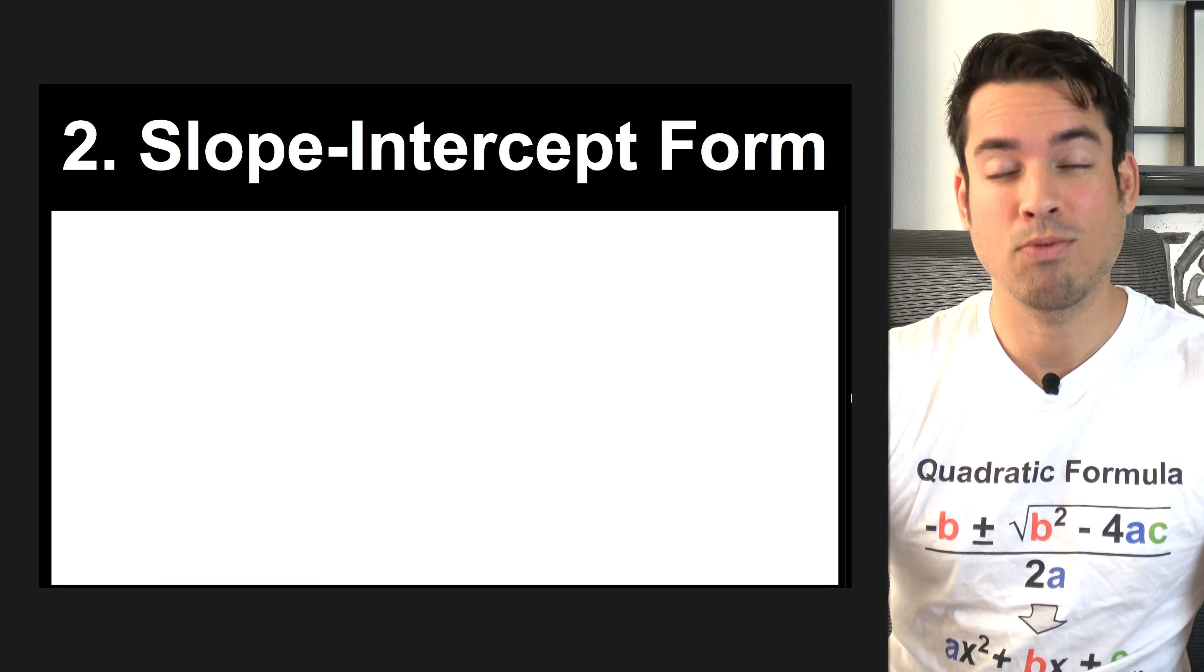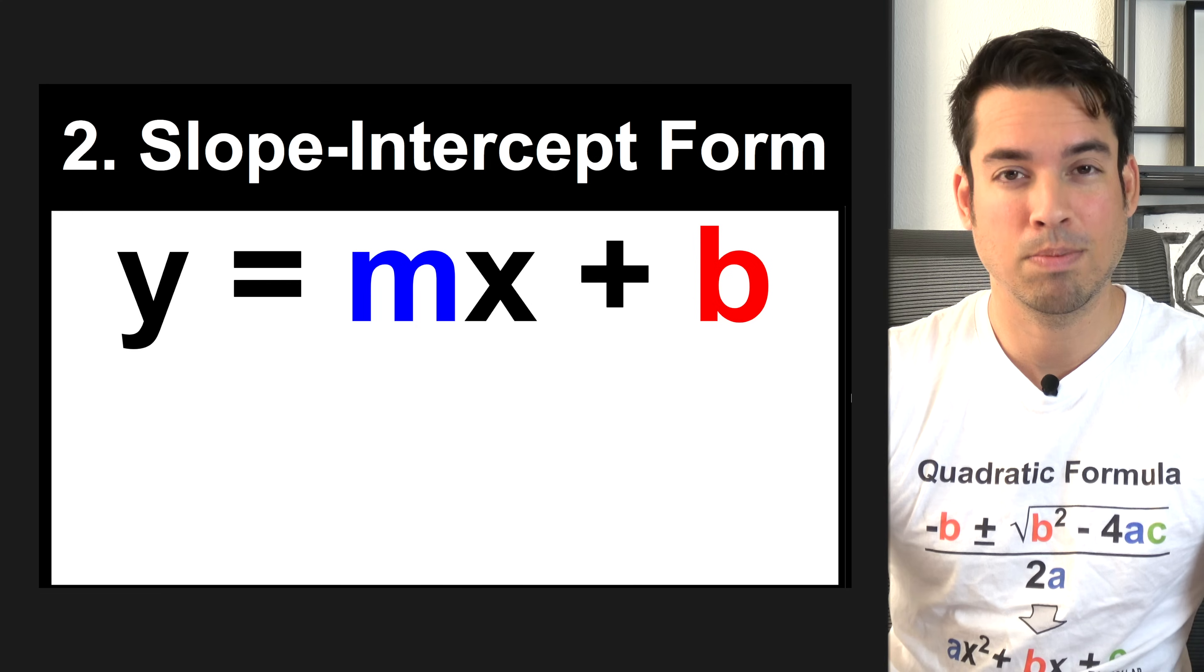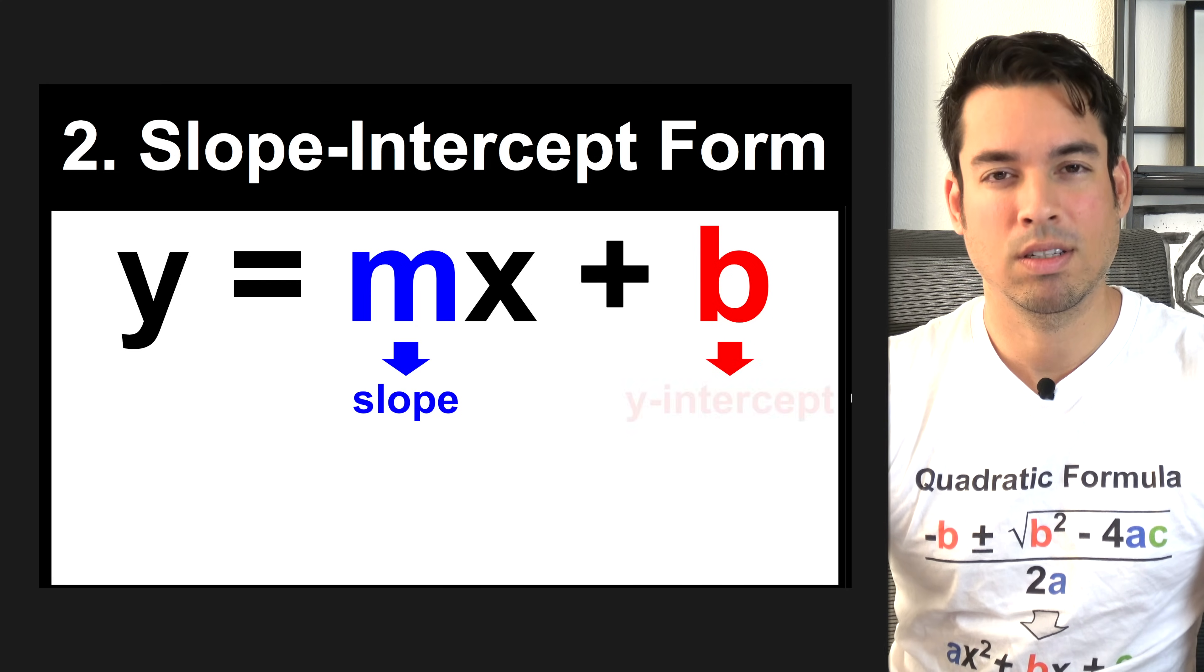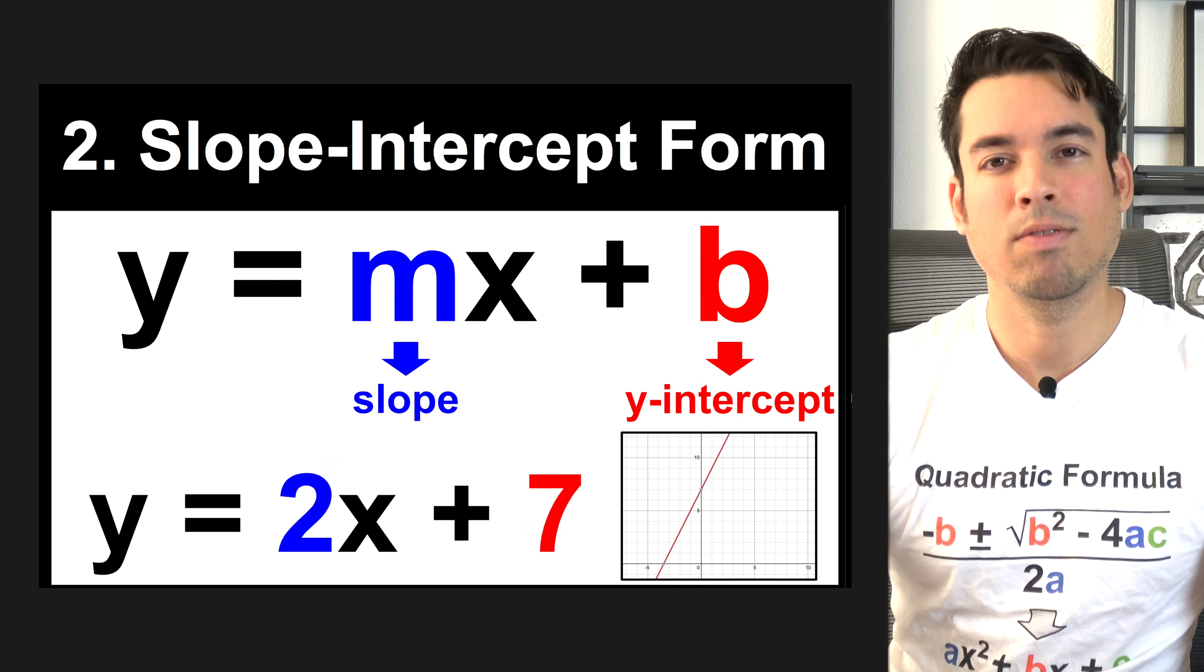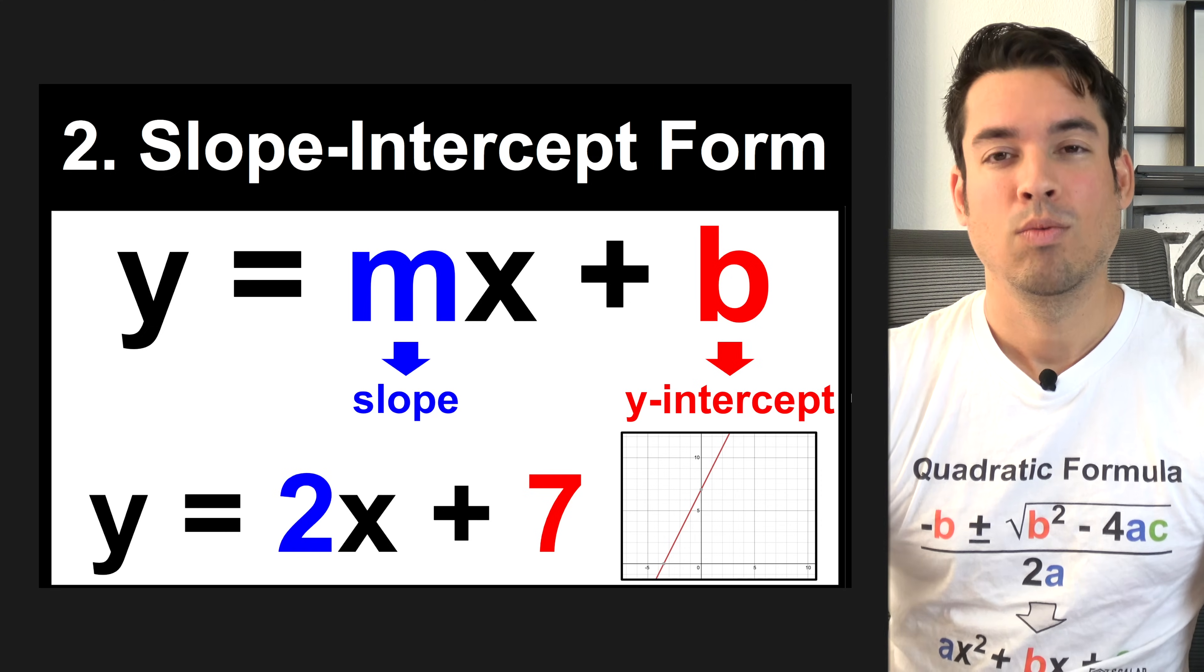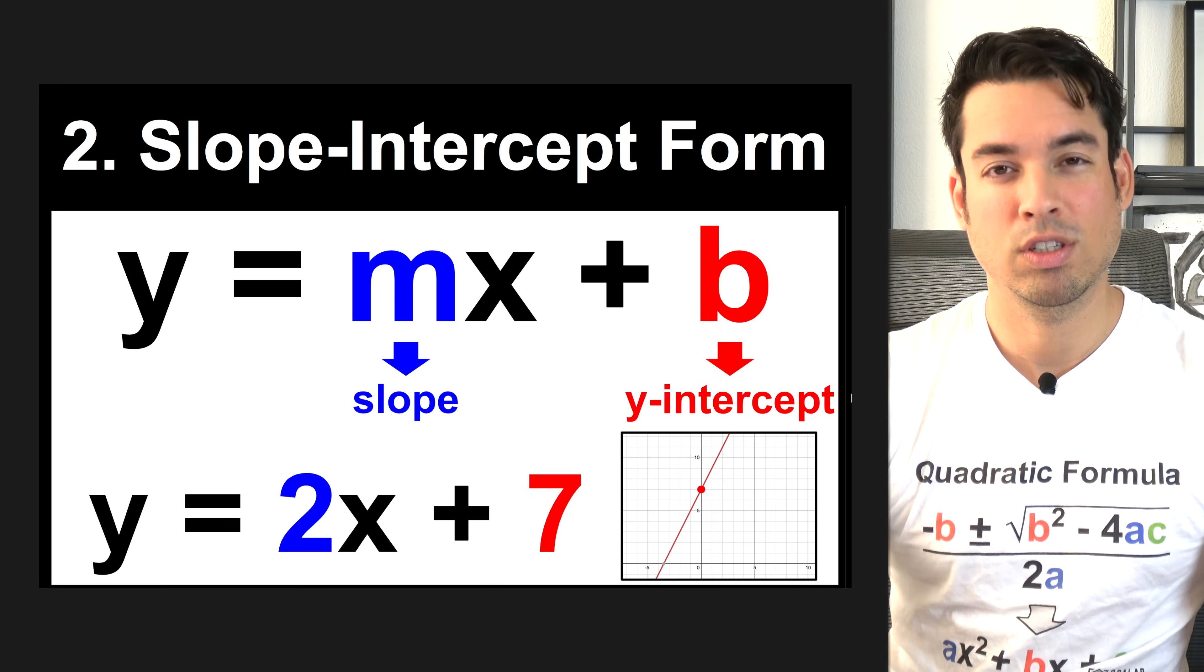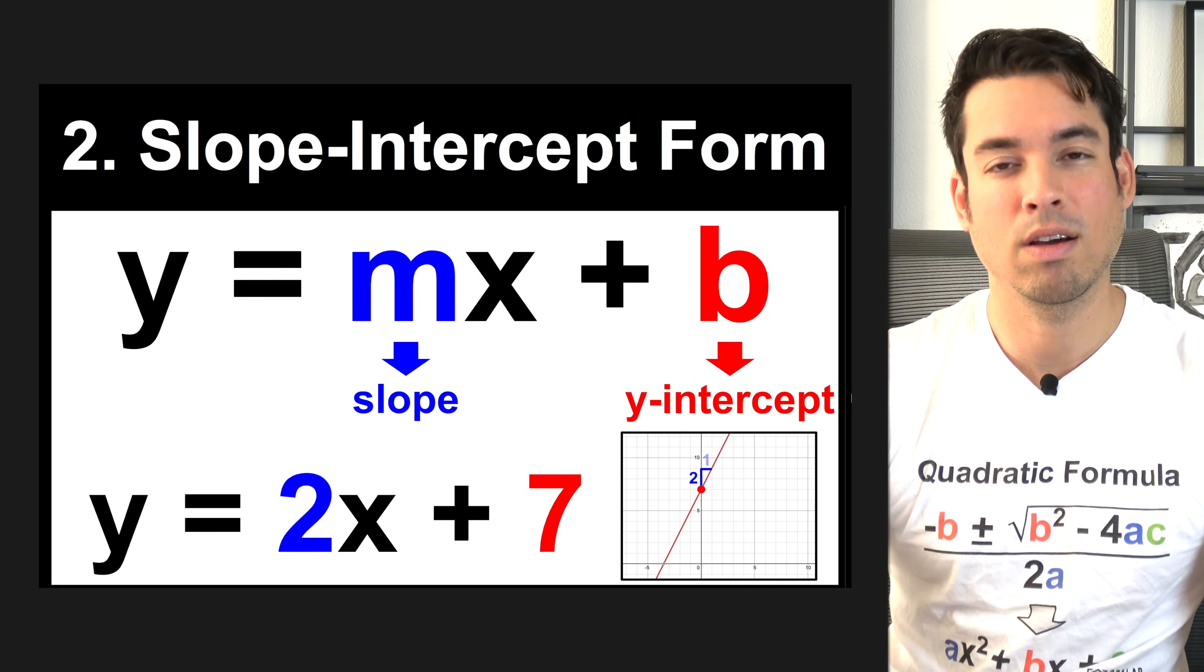Next, we have slope intercept form, a very famous formula, and this is Y equals MX plus B. In this formula, M represents the slope and B represents the Y-intercept. In this quick example of Y equals 2X plus 7, we see that 2 is the slope and 7 is the Y-intercept. If we were to plot this out, we see that 7 is where the line intercepts the Y-axis, and the slope is 2, which means it has a rise of 2 and a run of 1.